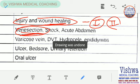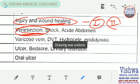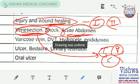Venesection is a small surgery performed to get access into a vein. Cover the indications of venesection, the process, and complications of venesection. Shock — we have already discussed. Acute abdomen is also important.